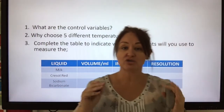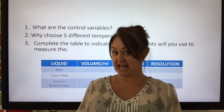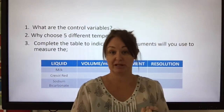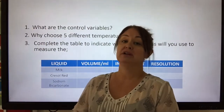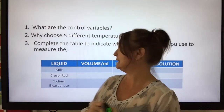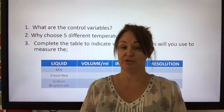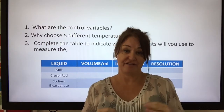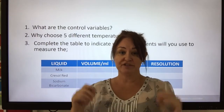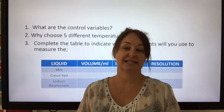What are the control variables? A control variable is something you keep the same for a fair test. We are going to keep the type of milk, the volume of milk, and the volume of sodium bicarbonate the same. The only thing we're changing is the temperature. Why five different temperatures? Five different results can produce a fairly decent graph — it's the minimum number of data points needed for a graph.